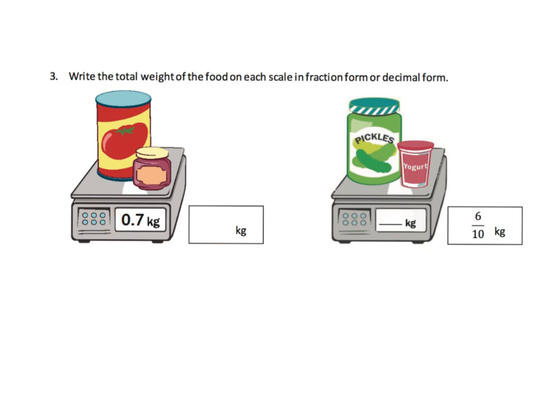Write the total weight of food on each scale in fraction form here and then in decimal form here. We've been given the decimal, so what is the fraction? In this case, it's seven tenths.